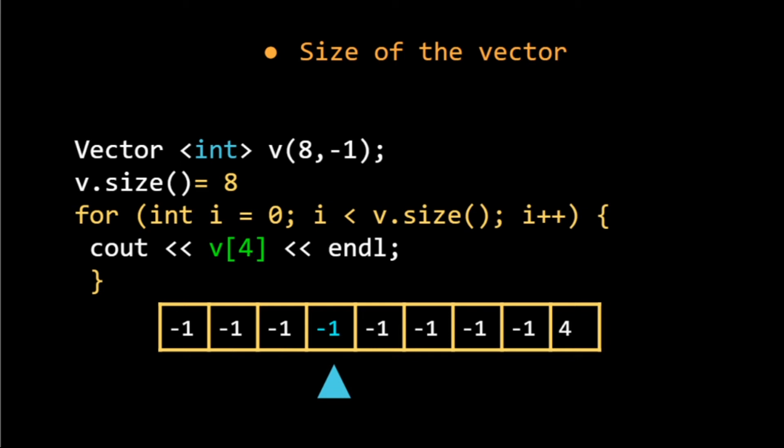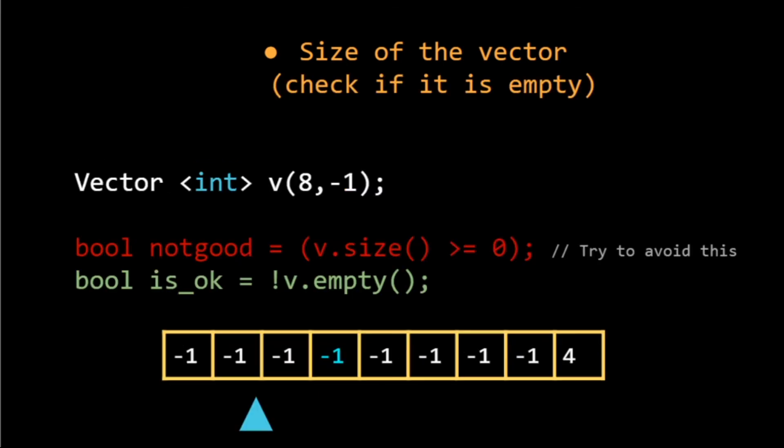If we want to check our array is empty or not, we can always compare the size with 0, but that's not the best thing. If we want to check if it is not empty, we can use !v.empty(). The thing is, for checking an empty vector, we just want to know if it has at least one element or not. It doesn't matter to us if it has 100 elements or 1000 elements, so using v.empty() is always better.